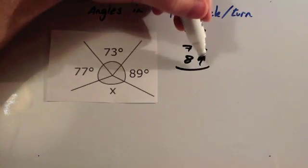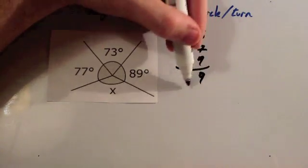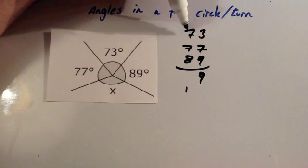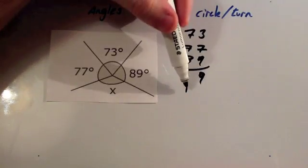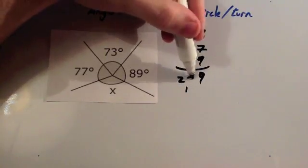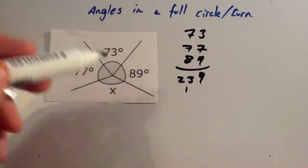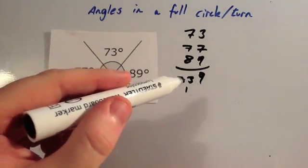3 plus 7 is 10, plus 9 is 19. Make sure you carry the one. 7 plus 7 is 14, plus 8 is 22, plus the one is 23. So the three angles they have given us add together to give 239 degrees.